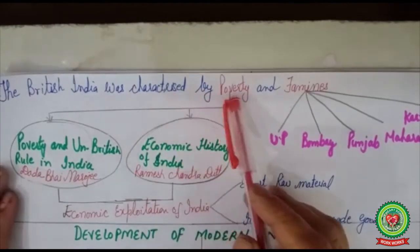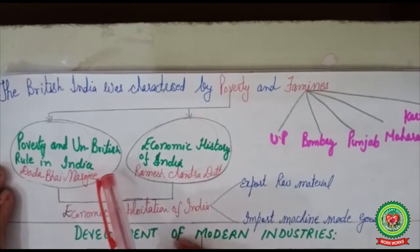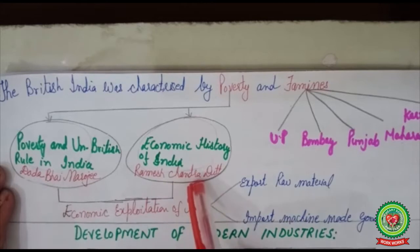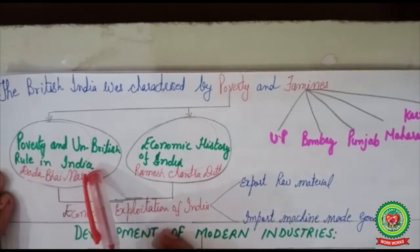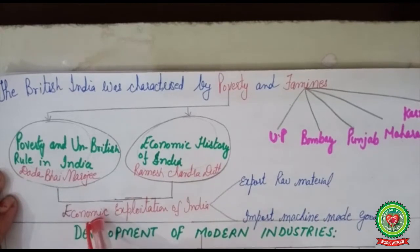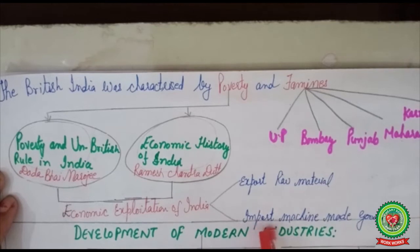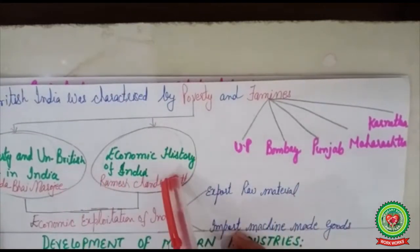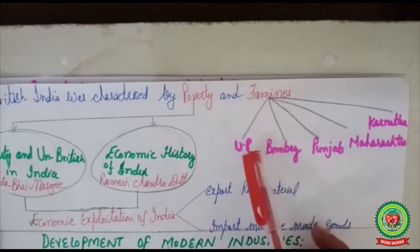British India was characterized by poverty and famines. Two of India's greatest economists before independence — Dadabhai Naoroji and Romesh Chunder Dutt — in their books called 'Poverty and Un-British Rule in India' and 'Economic History of India' declared that the British government was doing total economic exploitation of India, as they were exporting raw materials from India to England and importing machine-made goods. According to both these economists, there was a huge level of poverty in India and frequent famines in different provinces.